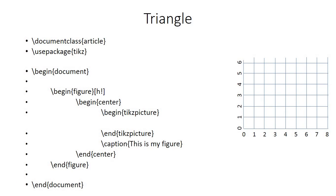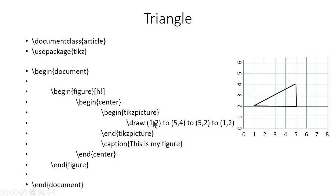Next let's draw a triangle in LaTeX. To draw a triangle everything remains the same except the coordinates. Suppose the starting point is (1, 2), this line leads to point (5, 4), then to point (5, 2), and then back to the starting point (1, 2). So the command will be \draw (1,2) to (5,4) to (5,2) to (1,2); — and if you compile the document this triangle will be drawn.